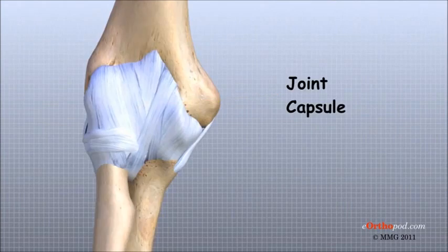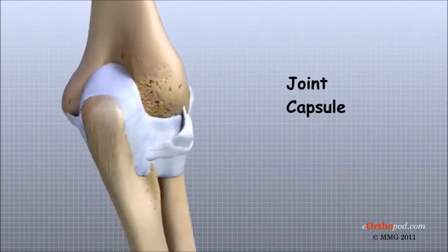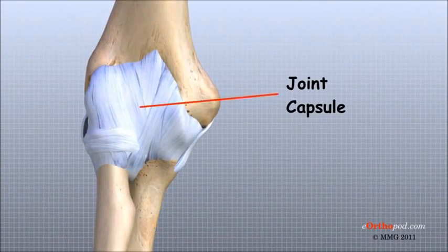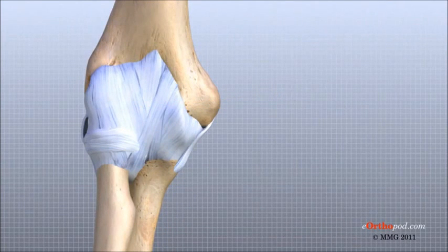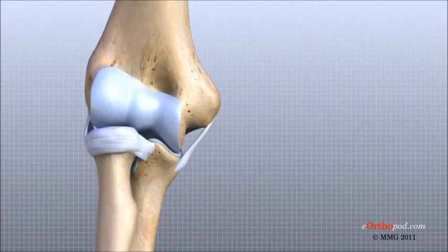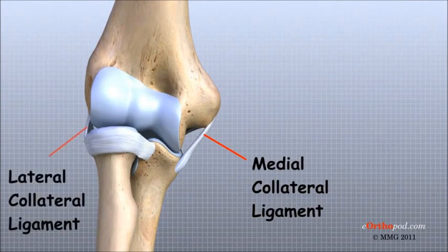The joint capsule is a watertight sac that surrounds a joint and contains lubricating fluid called synovial fluid. In the elbow, two of the most important ligaments are the medial collateral ligament and the lateral collateral ligament.